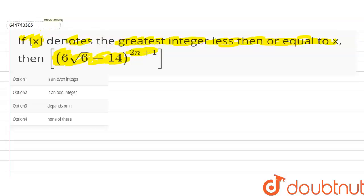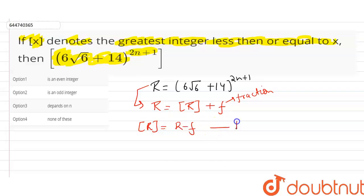Let us take this function as R. So R = (6√6 + 14)^(2n+1). Now we can write this R as: R = [R] + f, where [R] is the greatest integer value and f is some fraction value between 0 and 1. From here, [R] = R - f. This can be our first equation.